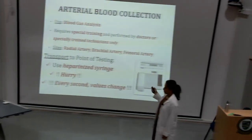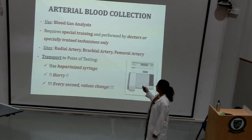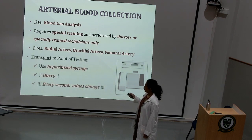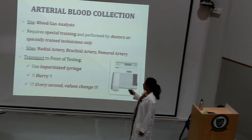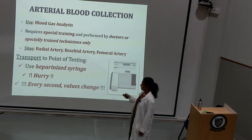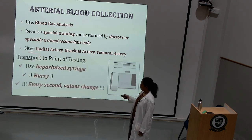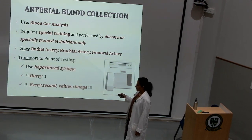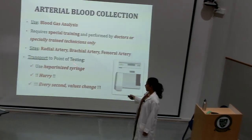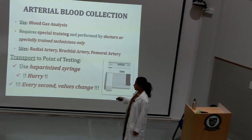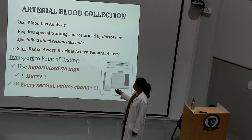For arterial blood collection, the most common indication is arterial blood gas analysis. It requires special training and can be performed only by doctors or specially trained technicians. Common sites are the radial artery, the brachial artery, or the femoral artery, in that order. It is very important to transport the specimen immediately to the point of testing. Collect the sample in a heparinized syringe and transport it immediately to the lab, because blood gas values change every second.